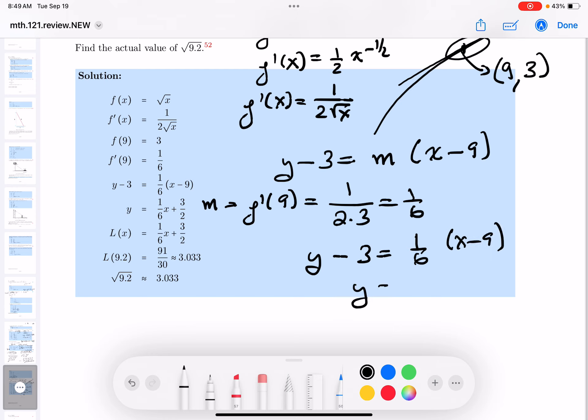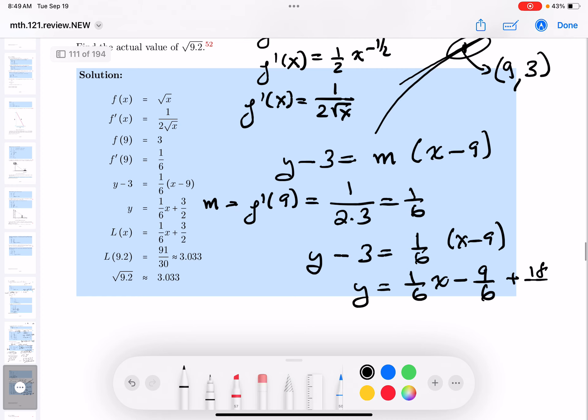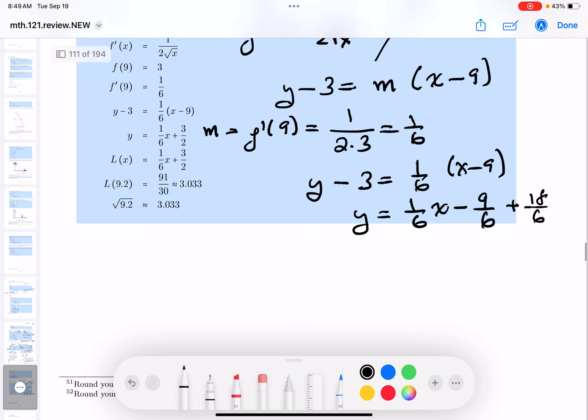Let me keep going. I'm going to say y equals 1/6 of an x minus 9/6, because 1/6 times 9 is 9/6. And then I'm going to add 3 to both sides, and I'm going to write that down as 18 over 6. Let me keep going. y equals, it's the linearization, it's that line, the tangent line, it's going to be 1/6 of an x, and minus 9/6 plus 18/6 is going to be 9/6.